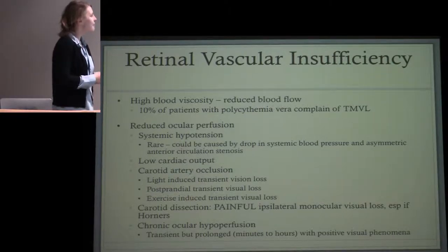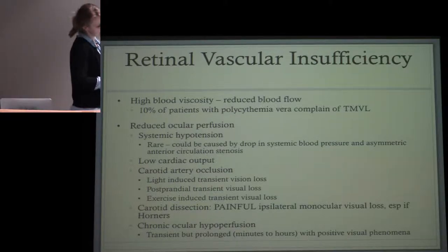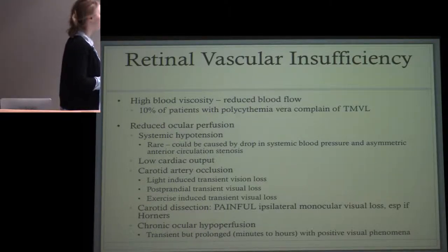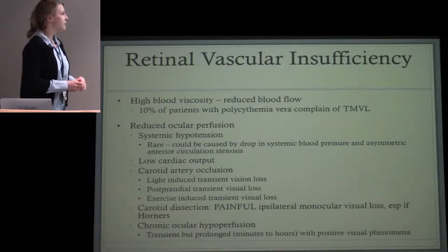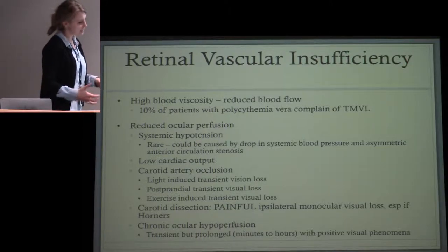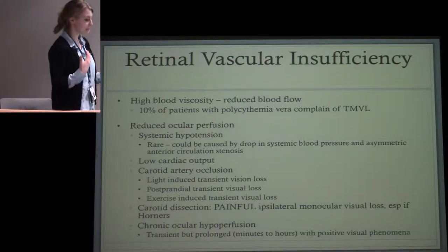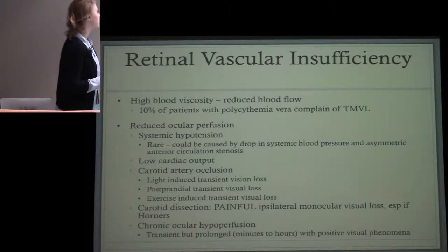For retinal vascular insufficiency, high blood viscosity can reduce blood flow. For example, about 10% of patients with polycythemia vera can complain of transient monocular vision loss. Systemic hypotension could potentially cause it — it's a little rare as a monocular presentation, but if there's a drop in systemic blood pressure with asymmetric anterior circulation stenosis, you could get this unilateral presentation.